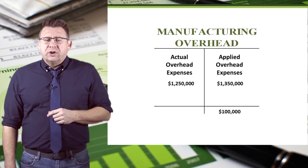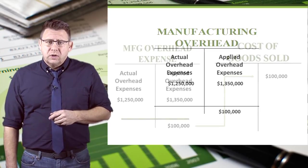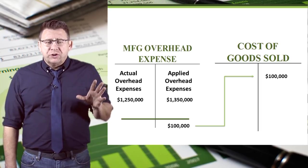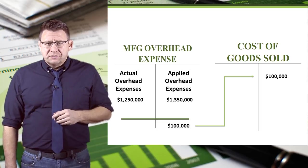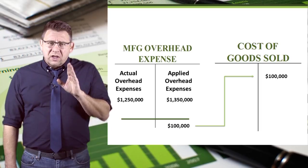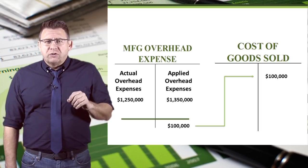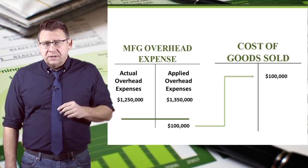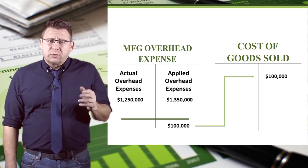What if manufacturing overhead is over-applied by $100,000? We move the $100,000 from manufacturing overhead to cost of goods sold by debiting overhead and crediting cost of goods sold. Now we've decreased the cost of our sold products. Since manufacturing overhead was over-applied, and therefore our jobs were over-costed, this now decreases the cost of our jobs to the correct amount.